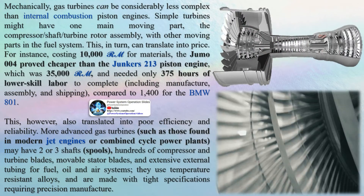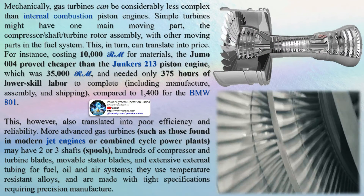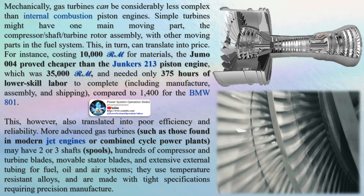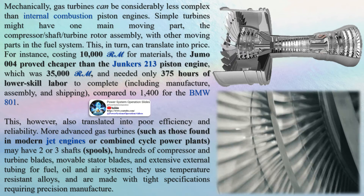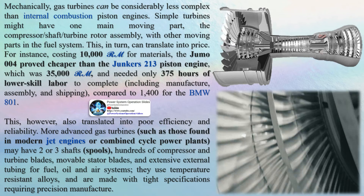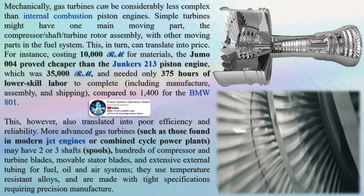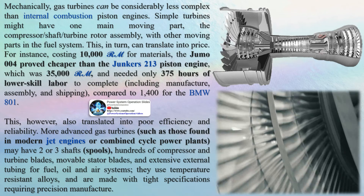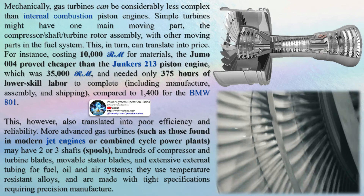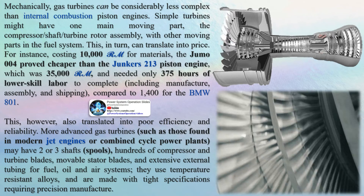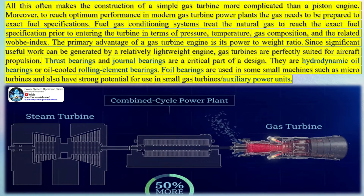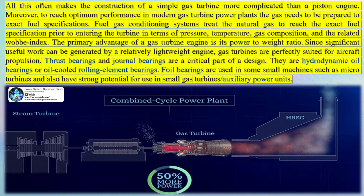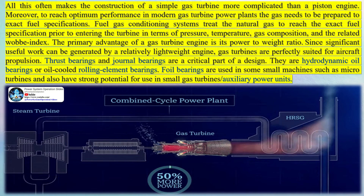For instance, costing 10,000 for materials, the Jumo 004 proved cheaper than the Junkers 213 piston engine at 35,000, and needed only 375 hours of lower-skill labor to complete including manufacture, assembly, and shipping, compared to 1,400 for the BMW 801. To reach optimum performance in modern gas turbine power plants, the gas needs to be prepared to exact fuel specifications. Fuel gas conditioning systems treat the natural gas in terms of pressure, temperature, gas composition, and the related Wobbe index.